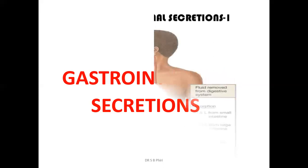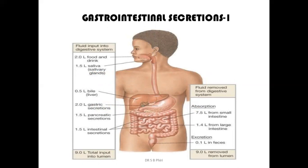This diagram summarizes the fluid input into the digestive system. On average per day, we introduce about two liters of fluid from food and drinks. Saliva production averages 1.5 liters per day. The salivary glands don't produce saliva continuously — there are stimuli that can increase or inhibit saliva production.